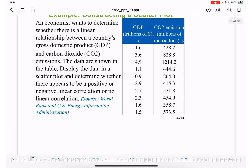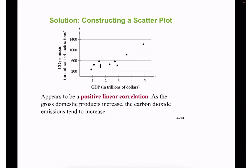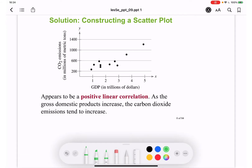Here is an example: given data for GDP and CO2 emission, we want to build the scatter plot and determine how CO2 emission depends on growing GDP. Is it linear correlation? If linear, is it positive or negative, or is there no correlation at all? When we build the scatter plot, we can see a positive linear correlation — as GDP is growing, emission is also growing.